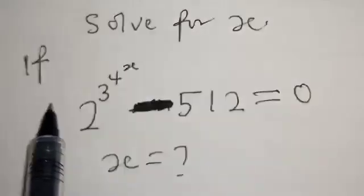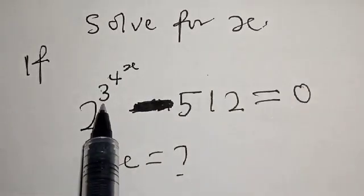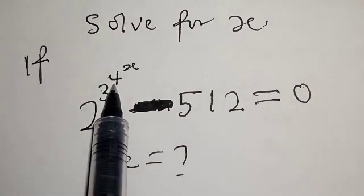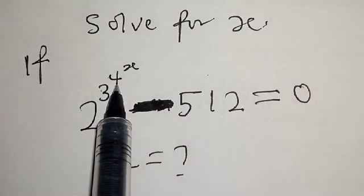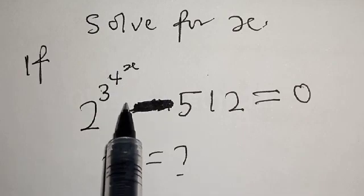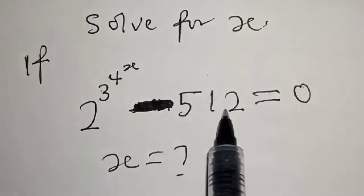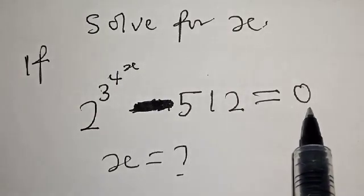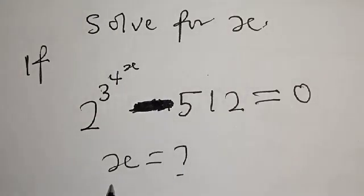Solve for x. If 2 raised to power 3 raised to power 4 raised to power x, minus 512, is equal to 0, what is the value of x?